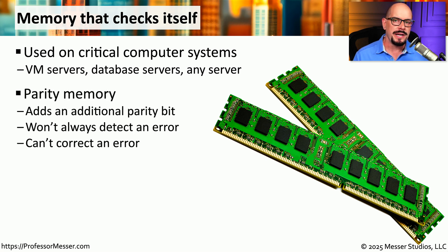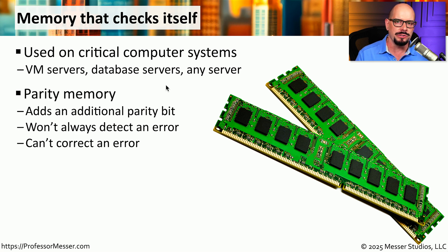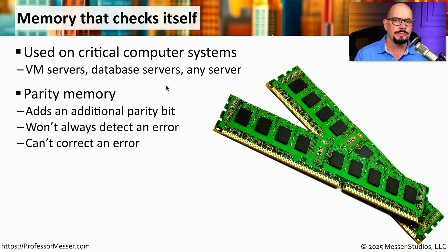The first memory type you might want to consider is parity memory. This is memory that includes an extra parity bit with each byte that is stored in the memory. This will not always detect errors that may have occurred in that memory, and it's not able to correct every error, but it can tell you that a memory error has occurred. This often requires the system halting and requires a full reboot, but at least you were informed where the problem was occurring.